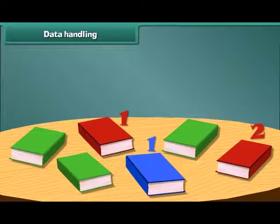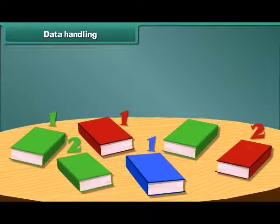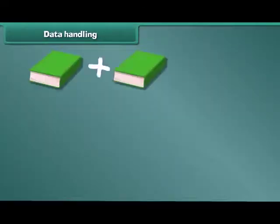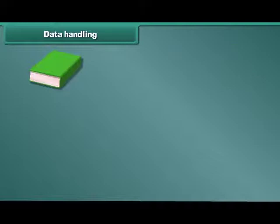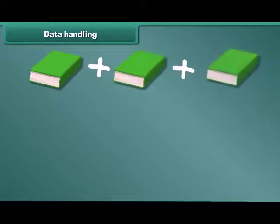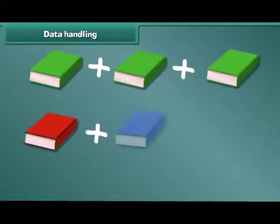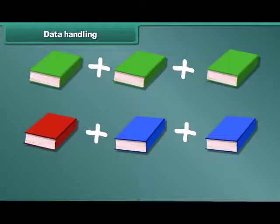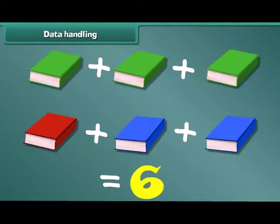How many green colored books do you see? 1, 2, 3. There are 3 green colored books. 1, 2, 3, 4, 5 and 6. We have arranged the data of all 6 books in a bookshelf.